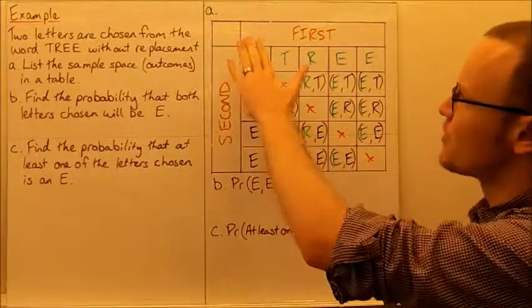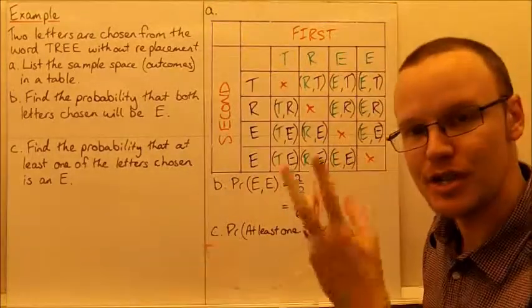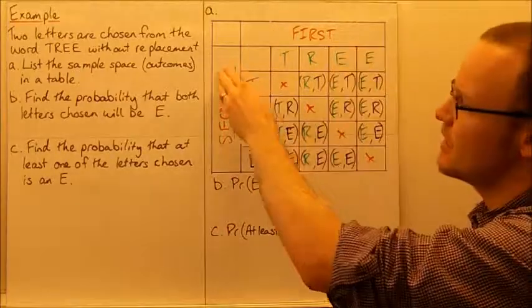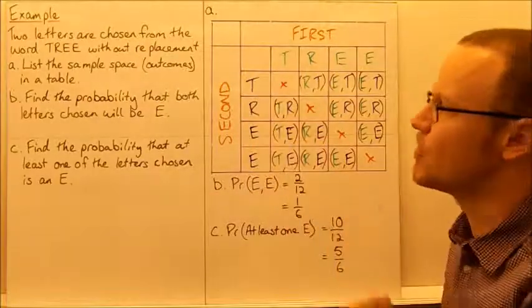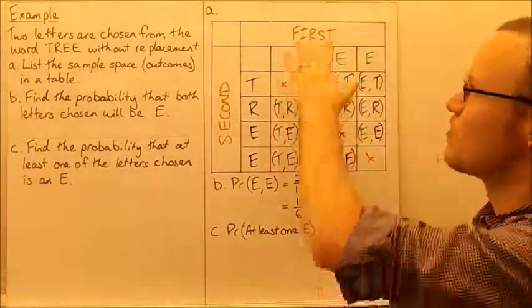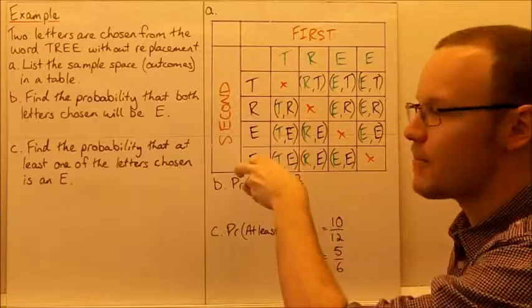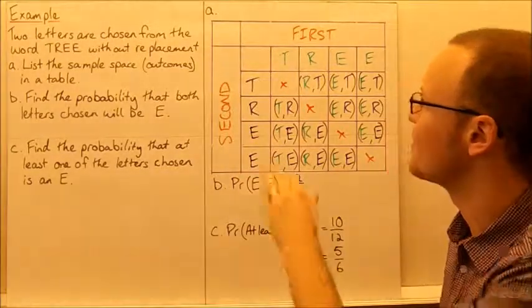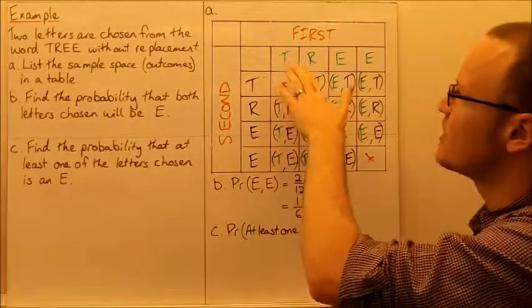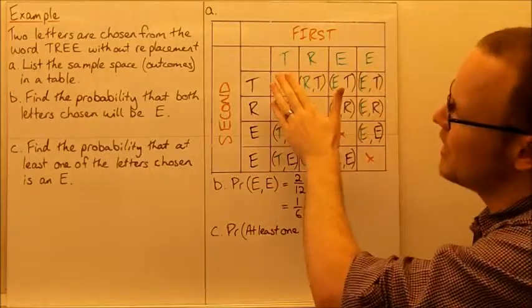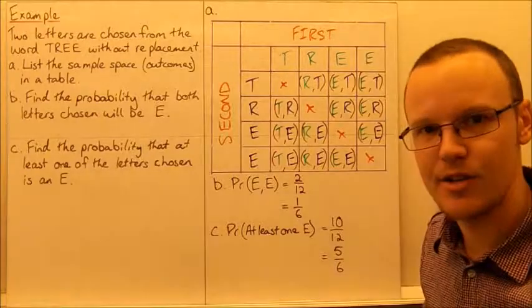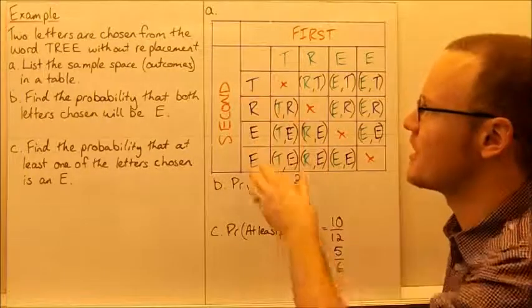For our table, we've got the first choice and then our second letter. The letters are all the same—they're not two different things like rolling a die and then flipping a coin. They're the same set. Here we've got the letters T, R, E, E that we can possibly choose from for our first choice and then our second choice.